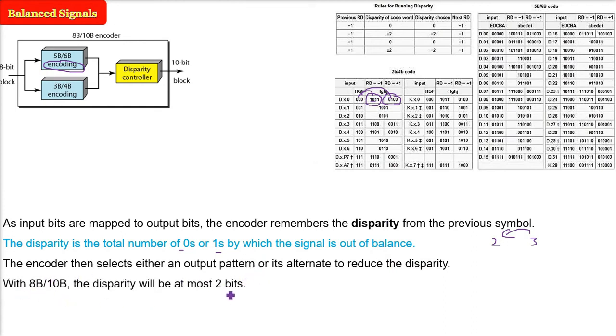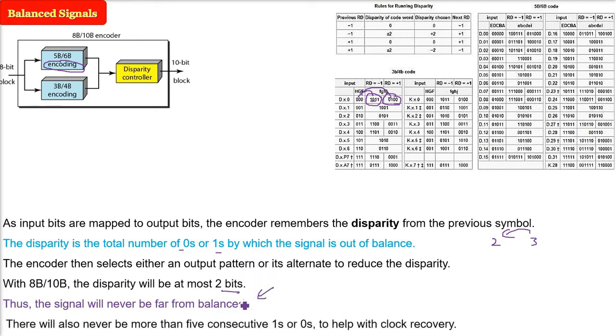With 8b/10b, the disparity will be at most two bits. The signal will always be balanced and there will never be more than five consecutive 1s or 0s. If you take any combination, you will not get more than five 1s or five 0s.